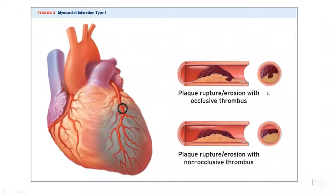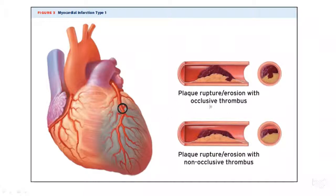Here is a depiction of type 1 myocardial infarction. Type 1 MI typically involves STEMIs, where patients have a ruptured plaque with 100% occlusion of the vessel — these patients must go to the cath lab for PCI immediately, as it is an emergent situation. Non-STEMIs involve about 80 to 90% obstruction of the vessel.